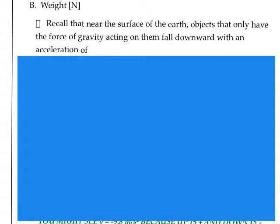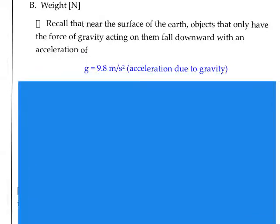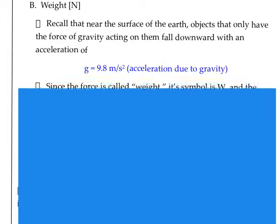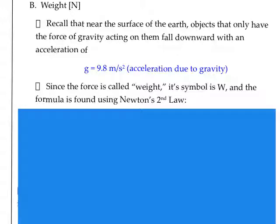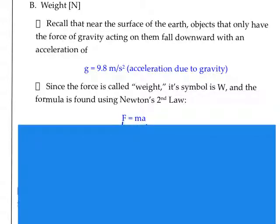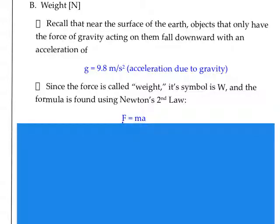If you recall, near the surface of the Earth, objects that only have the force of gravity acting on them fall downward with an acceleration of—and I hope you remember—the acceleration due to gravity is 9.8 meters per second squared. We're going to use that value as our acceleration. We're going to go back to Newton's second law. You should remember from your notes on the previous evening that Newton's second law was F equals ma.